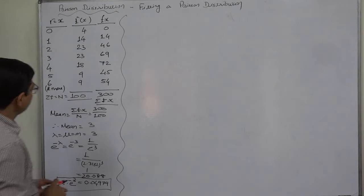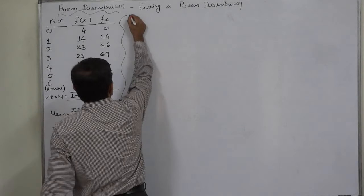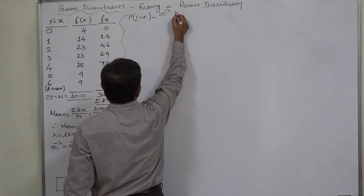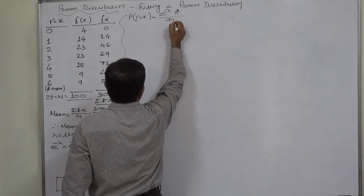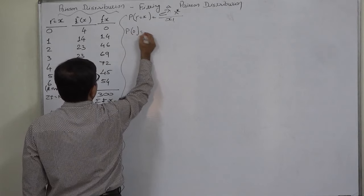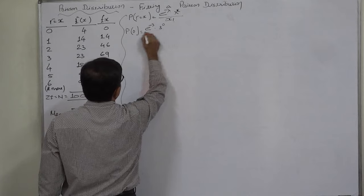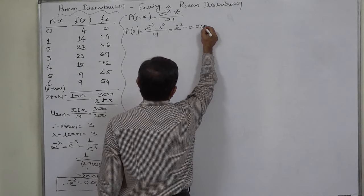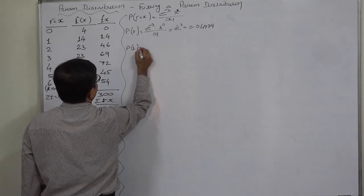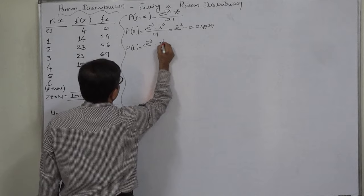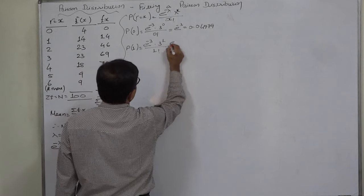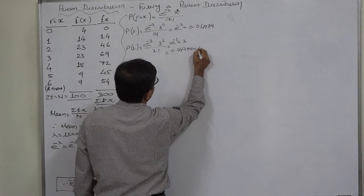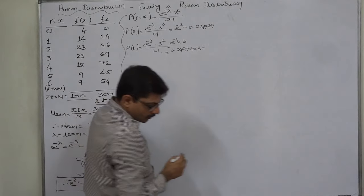Now we have the mean, so we can calculate all Poisson probabilities. The formula is: P(R = x) = e raised to minus m, times m raised to x, divided by x factorial. For P(0): e raised to minus 3 times 3 raised to 0 divided by 0 factorial equals e raised to minus 3, which is 0.04979. For P(1): e raised to minus 3 times 3 raised to 1 divided by 1 factorial equals 0.04979 times 3, giving 0.14937.